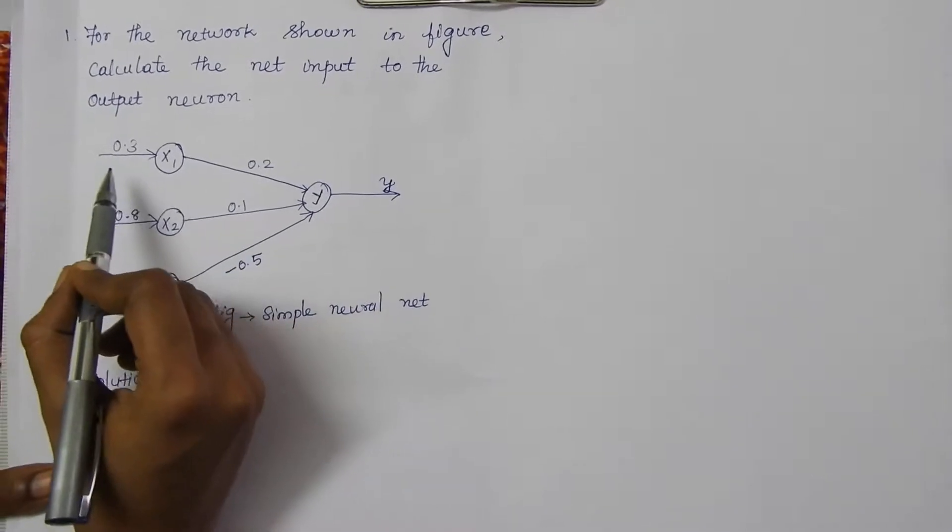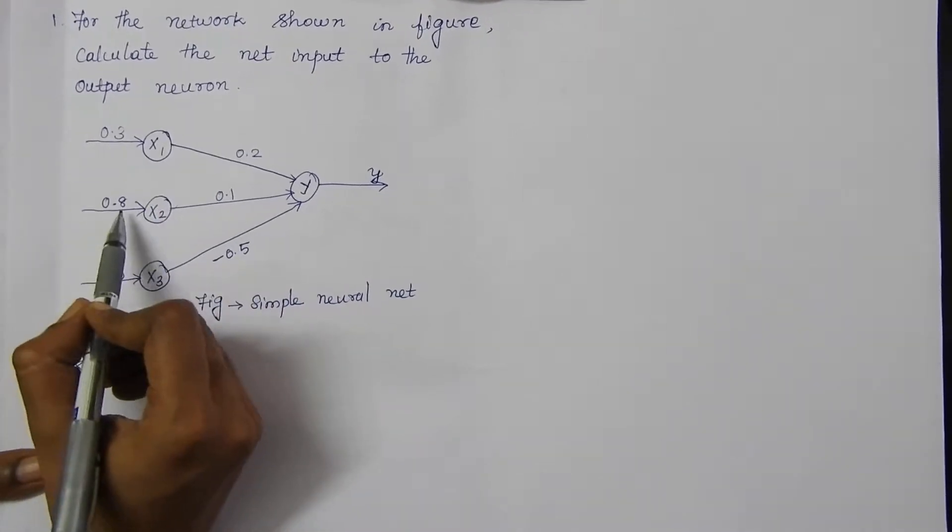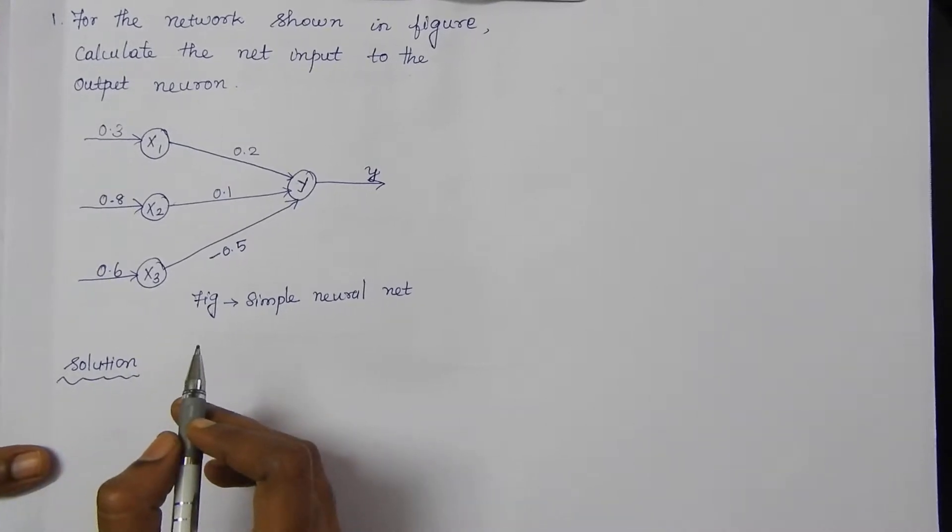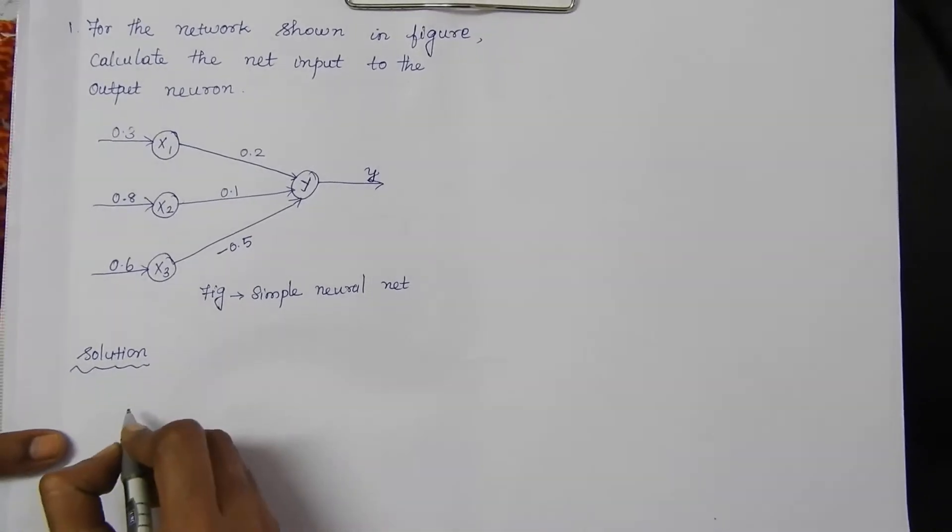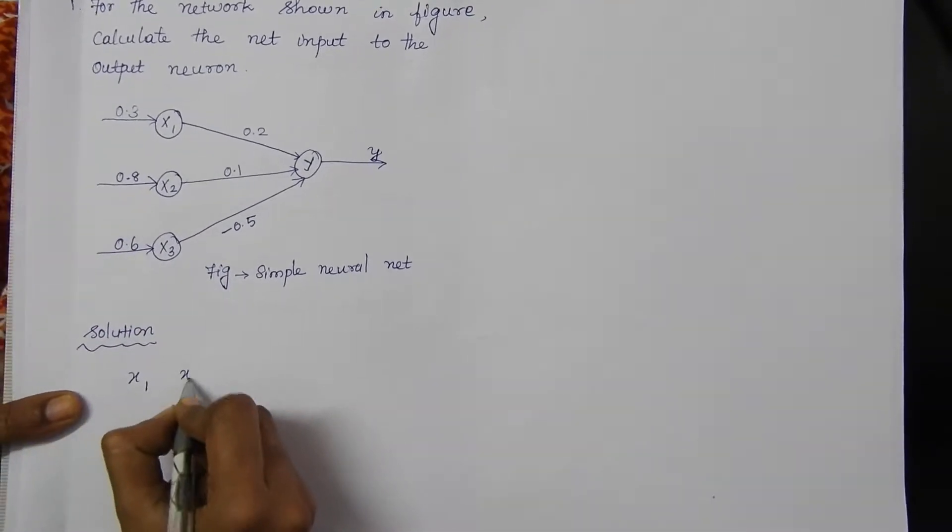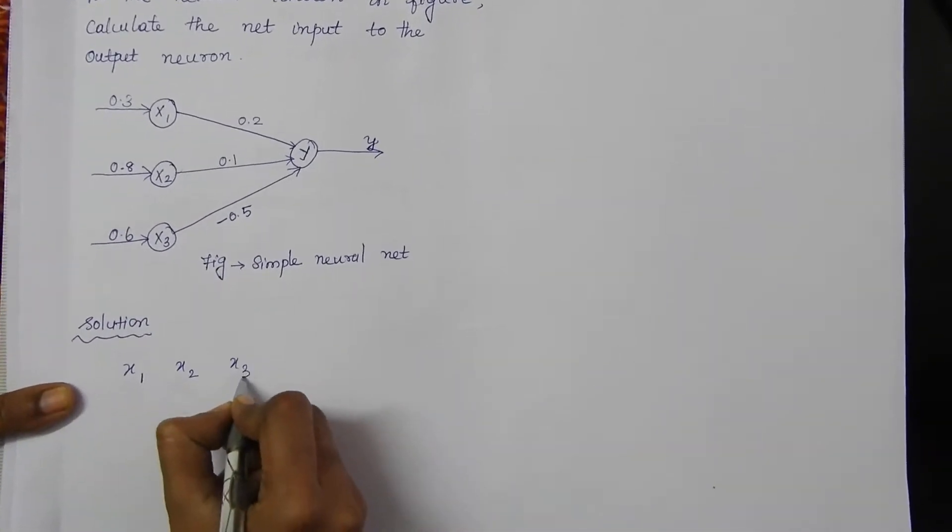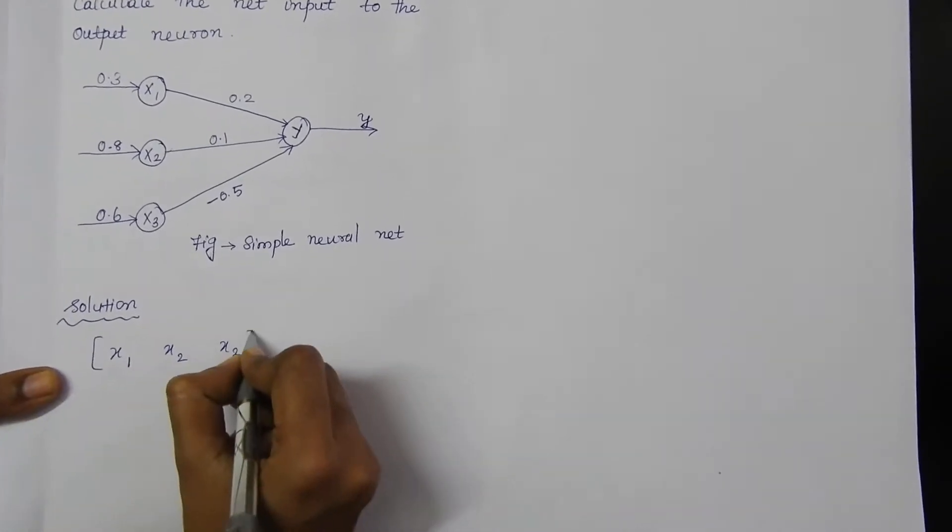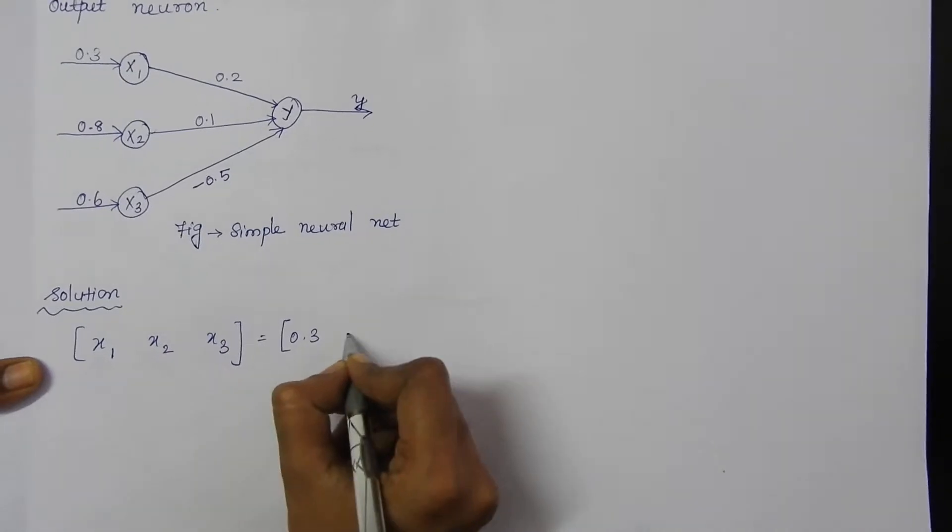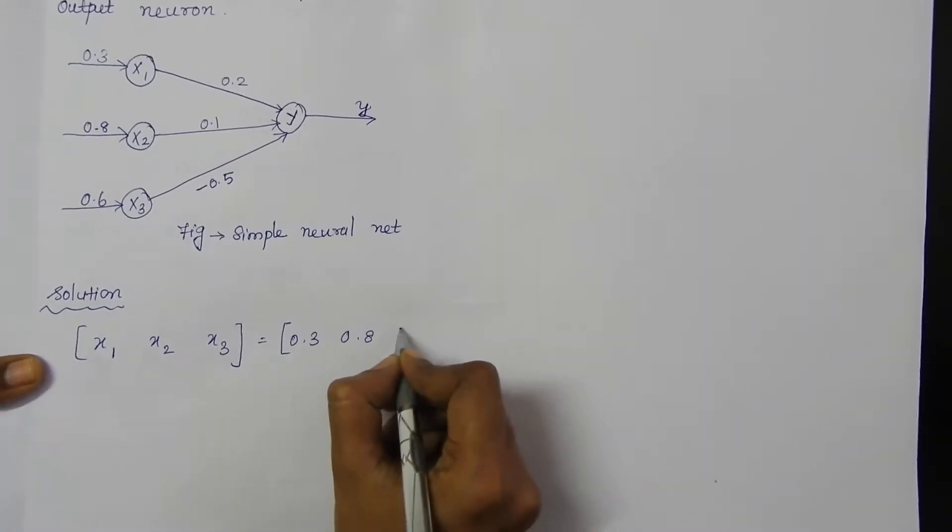The input neurons have values 0.3, 0.8, and 0.6. Let's find the net input to the output neuron. First write the input neuron values x1, x2, and x3. The corresponding values are 0.3, 0.8, and 0.6.